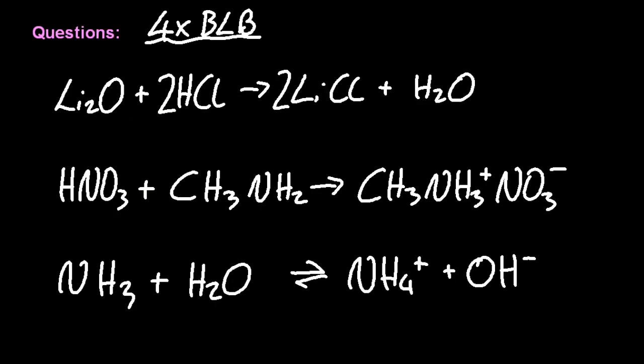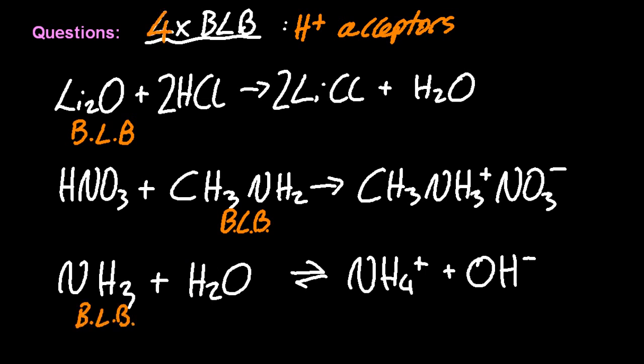So for Bronsted-Lowry bases, of course they are proton acceptors. Can you identify them? Well, the first one, lithium oxide is the Bronsted-Lowry base. And I don't want to confuse you, an arrow normally means the movement of two electrons. But in this case, the arrow is showing the movement of the proton. So an arrow here is showing how the proton is moving. Bronsted-Lowry bases, both of those two. Ammonia is the Bronsted-Lowry base. It receives the H+. And where's the fourth one? Well, there's a reversible reaction. So going back the other way, the hydroxide ion is the Bronsted-Lowry base.